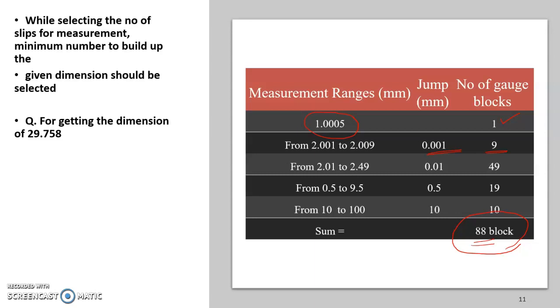Then this is an example. This is the dimension we need to make using a slip gauge for getting a dimension of 29.758 mm. So using this gauge block set, how will we make this one will be explained one by one. We need to choose from the smallest slip gauge to highest slip gauge.